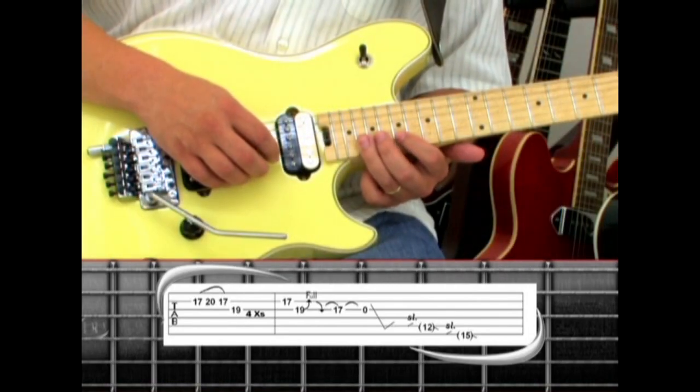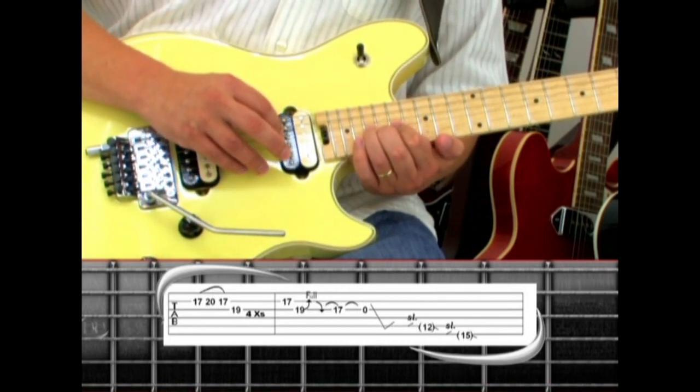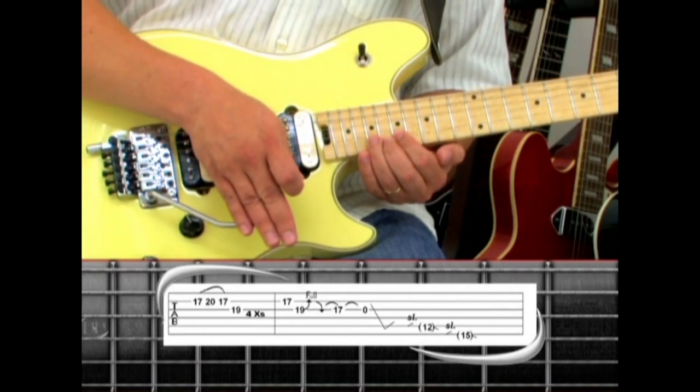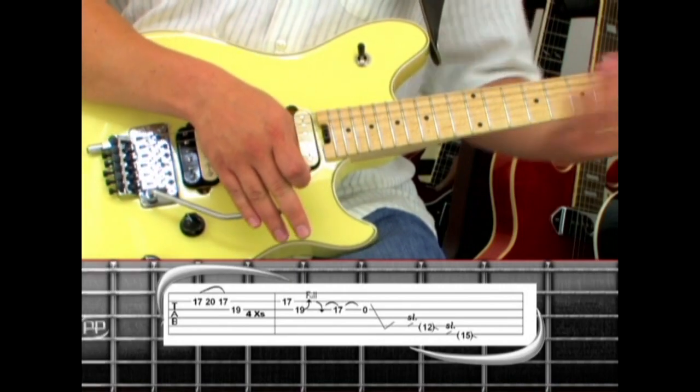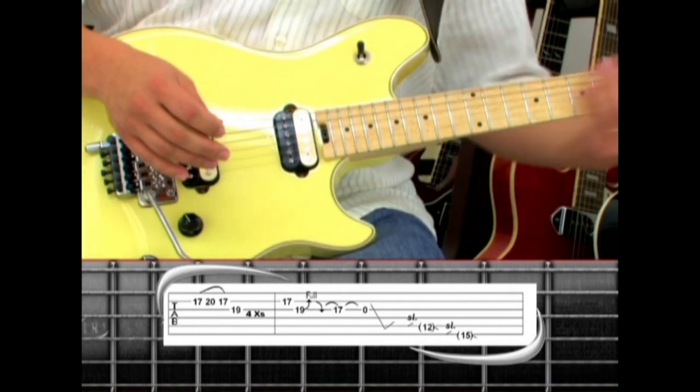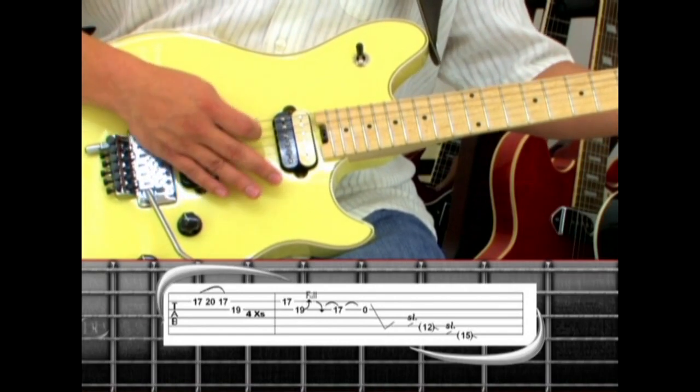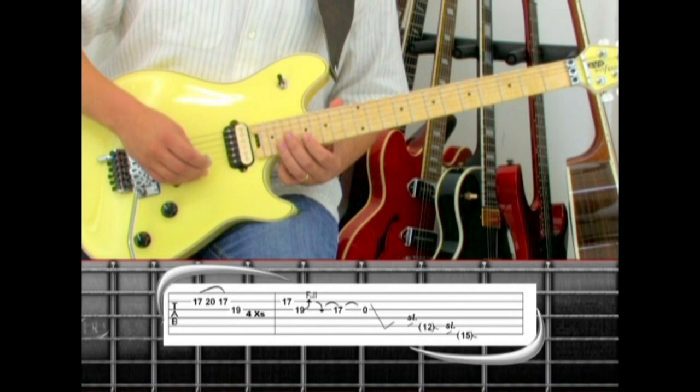Next is a second string seventeen to third string nineteen with a bend and release. Pull off to seventeen, pull off to open with a tremolo bar dive. As you return the bar, slide up to the fifth string twelve, then the sixth string fifteen, and slide down the neck for another chorus.